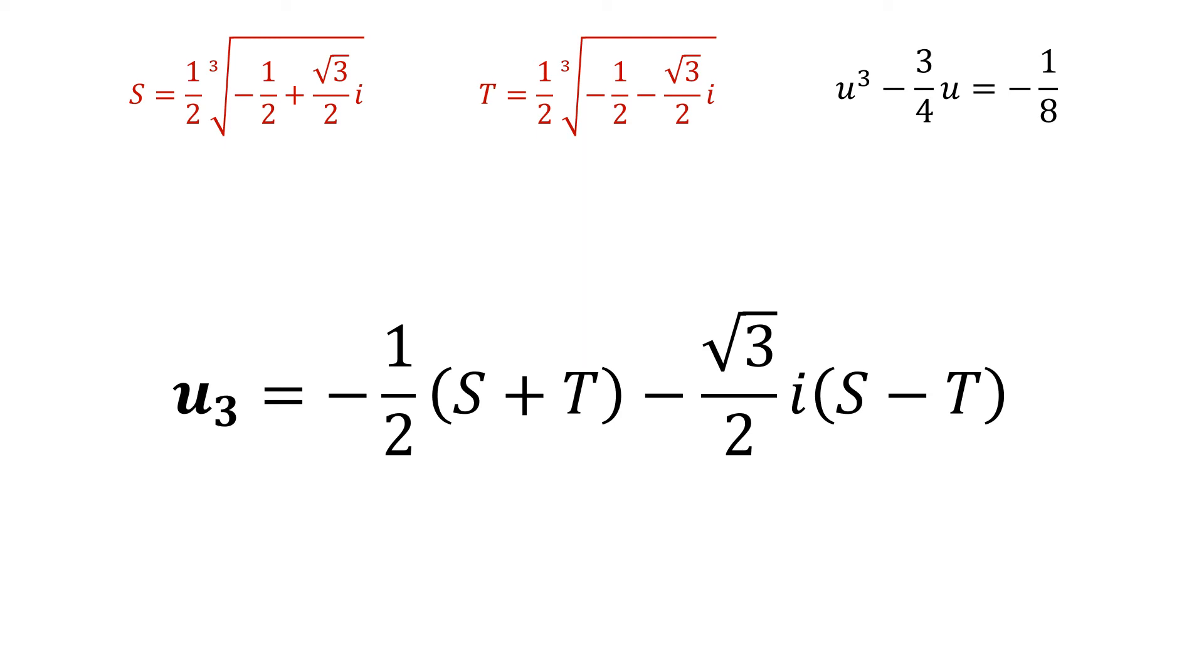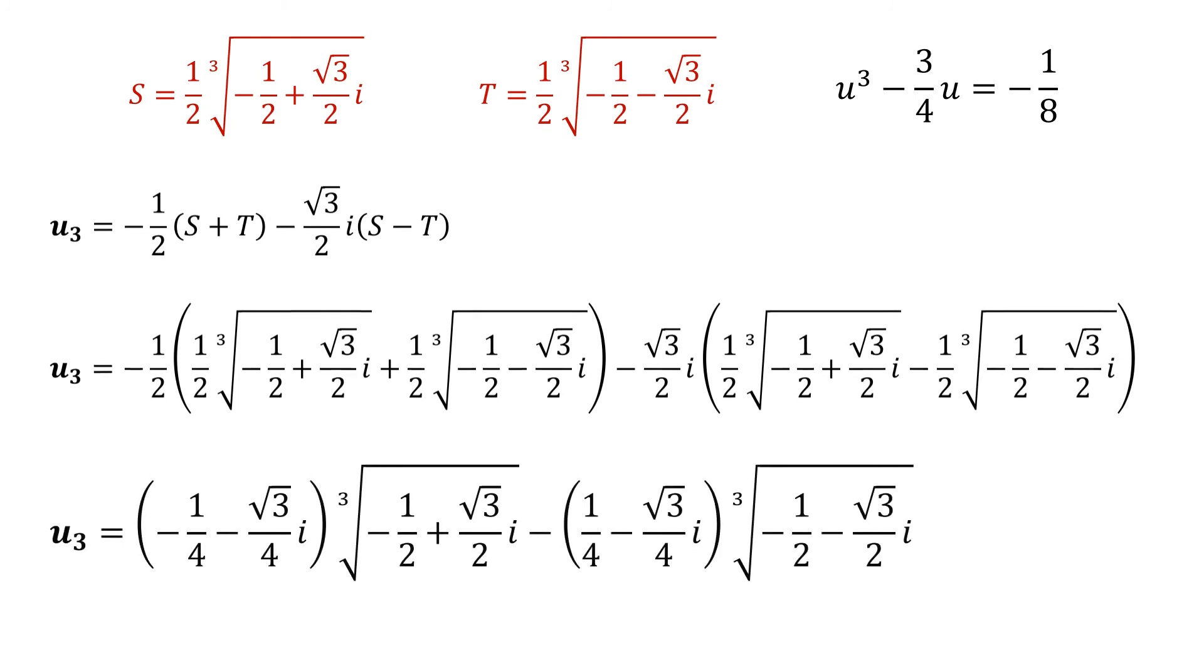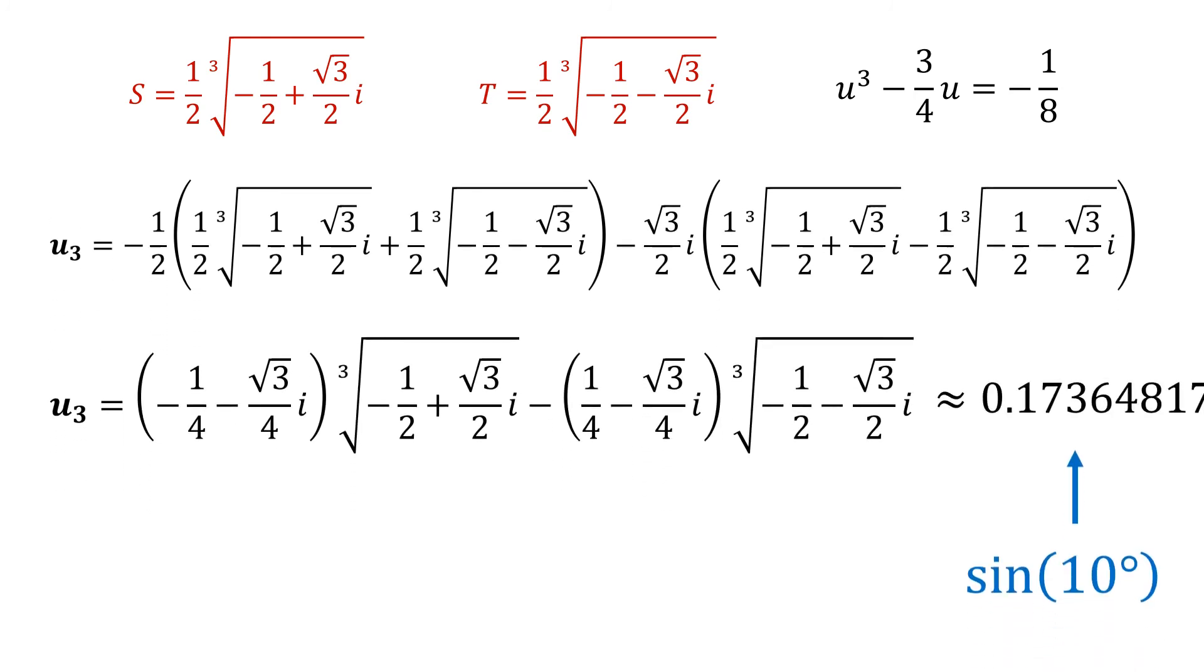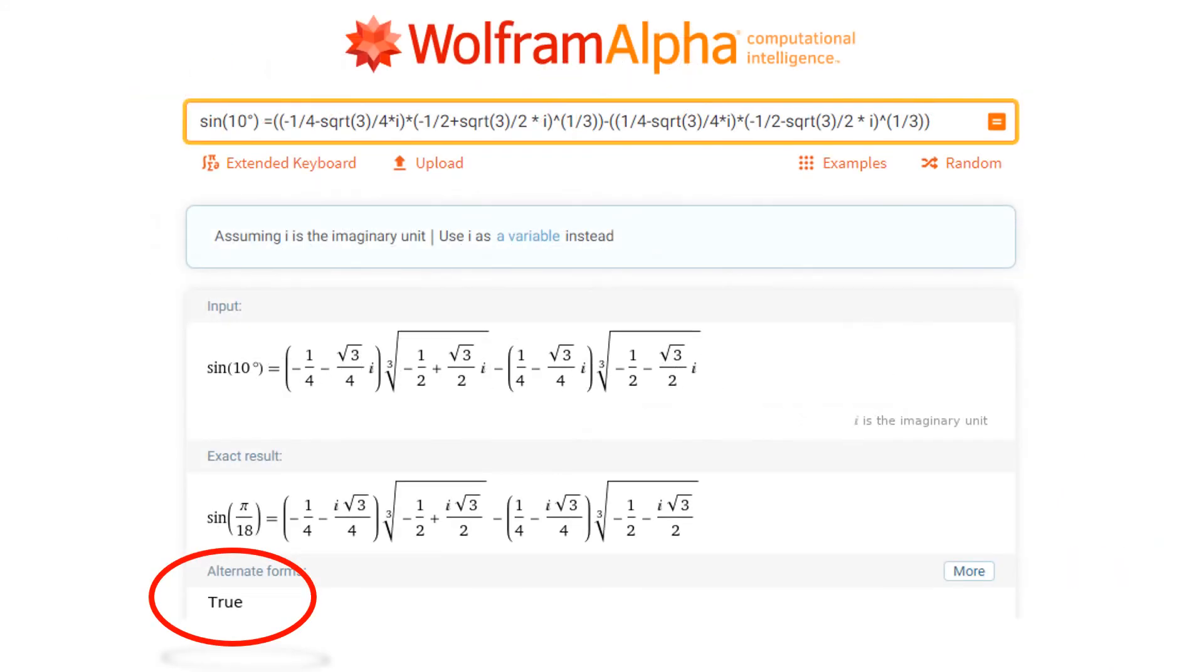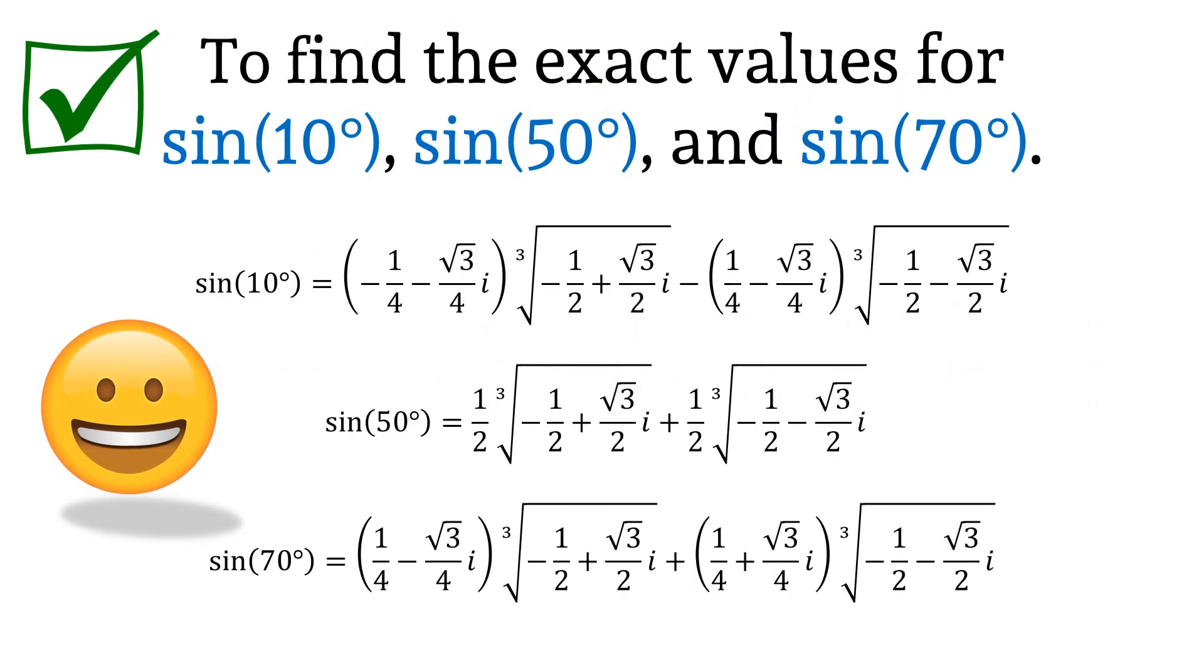Let's go ahead and substitute in our S and T values one last time. Maybe simplify it a little and try to get a decimal approximation. Okay, it seems like it could be the sine of 10 degrees. Wolfram? Yeah, good to go. So check, check, and checkmate. First goal accomplished. So here are all of our values. Don't they look simply radiant?